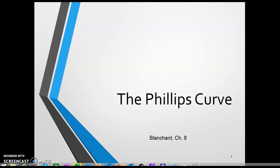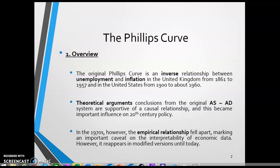The Phillips Curve, named after A.W. Phillips, who was a New Zealand-born British economist and taught at the London School of Economics, is an empirically observed relationship between unemployment and inflation, first established in the United Kingdom from about the middle of the 19th century to the middle of the 20th century.